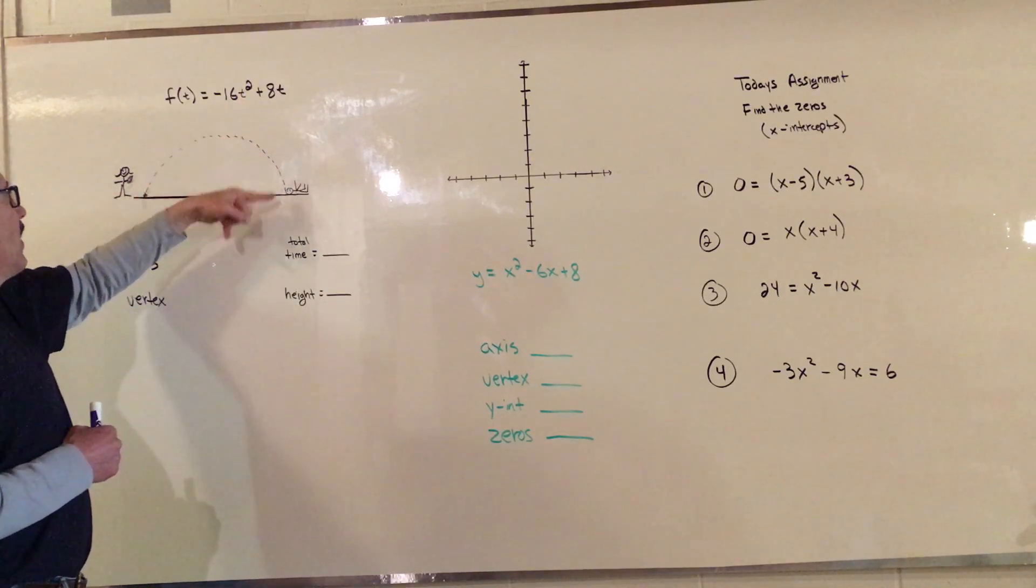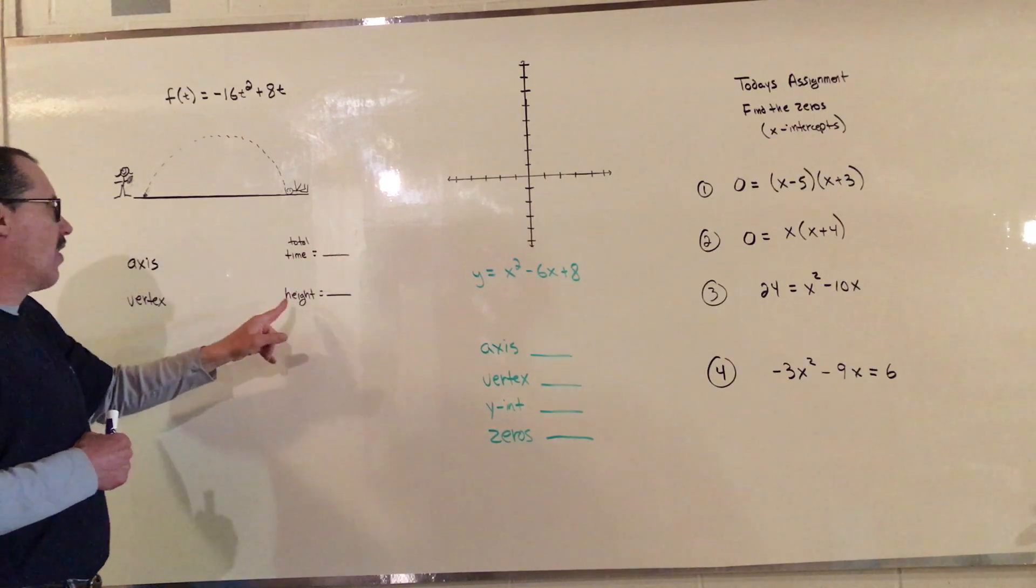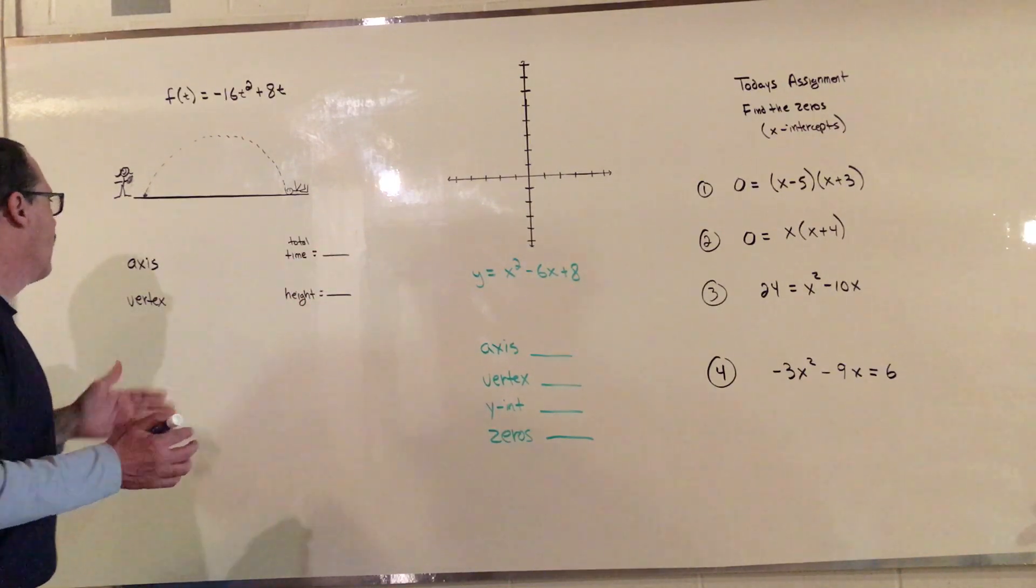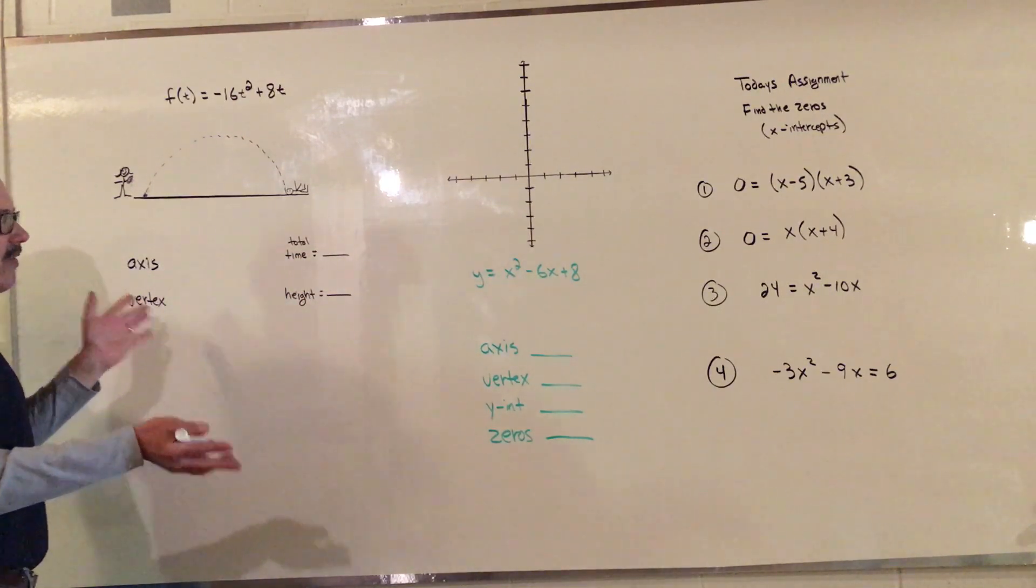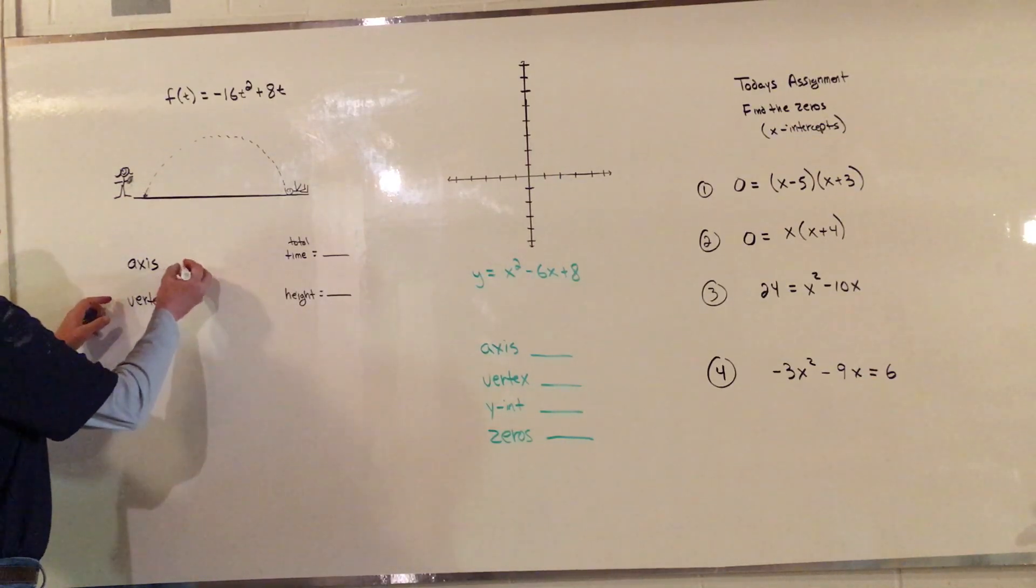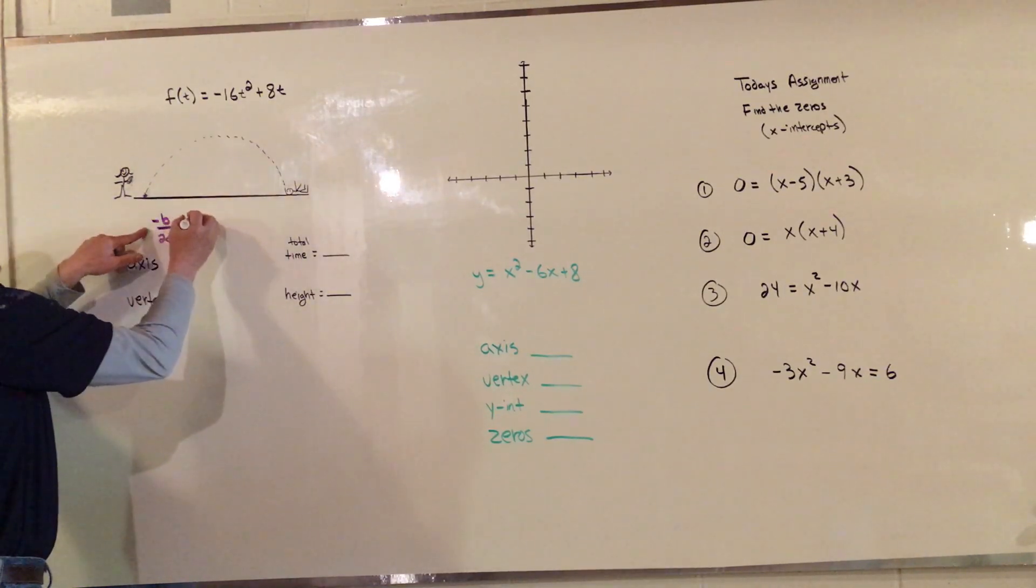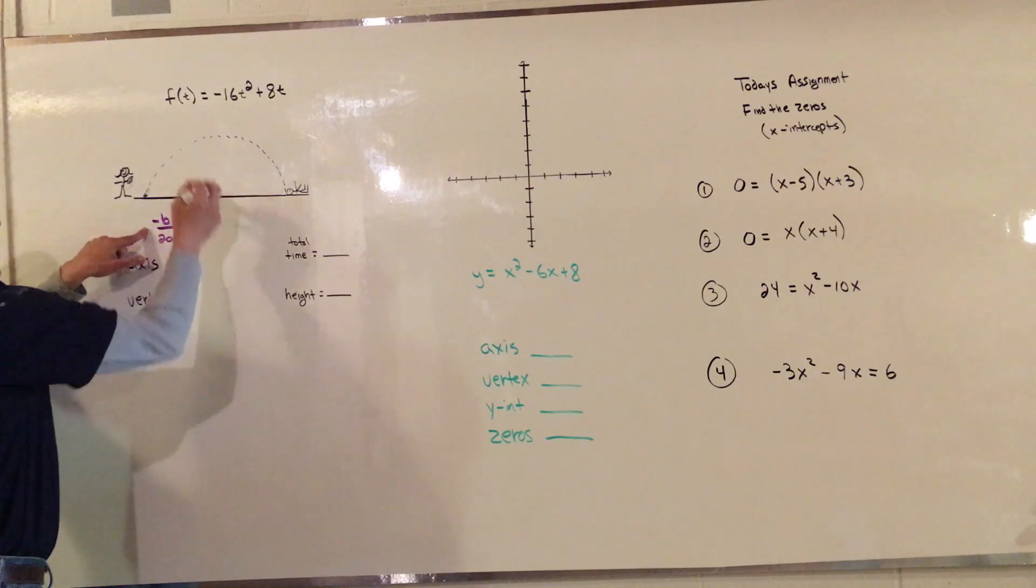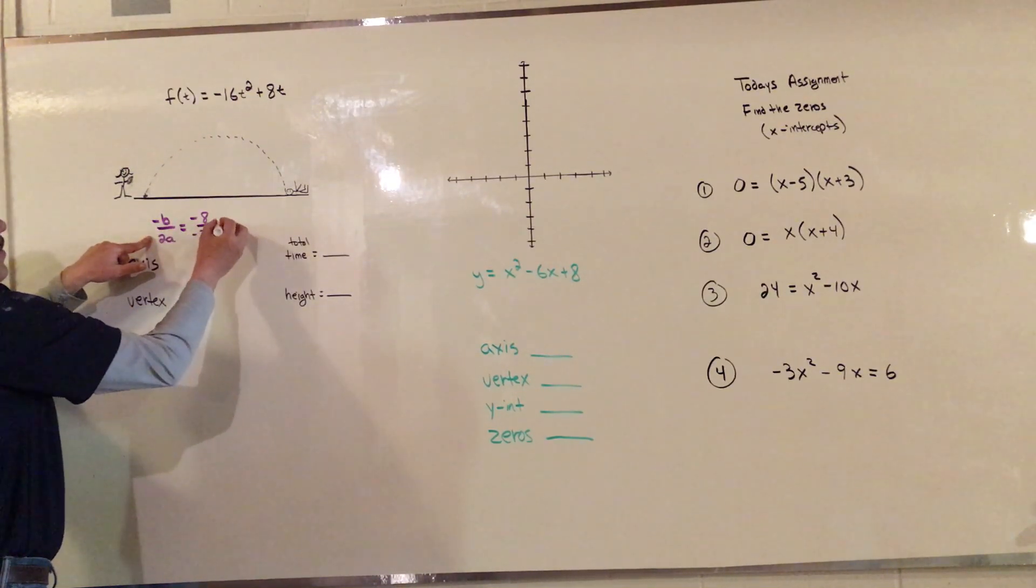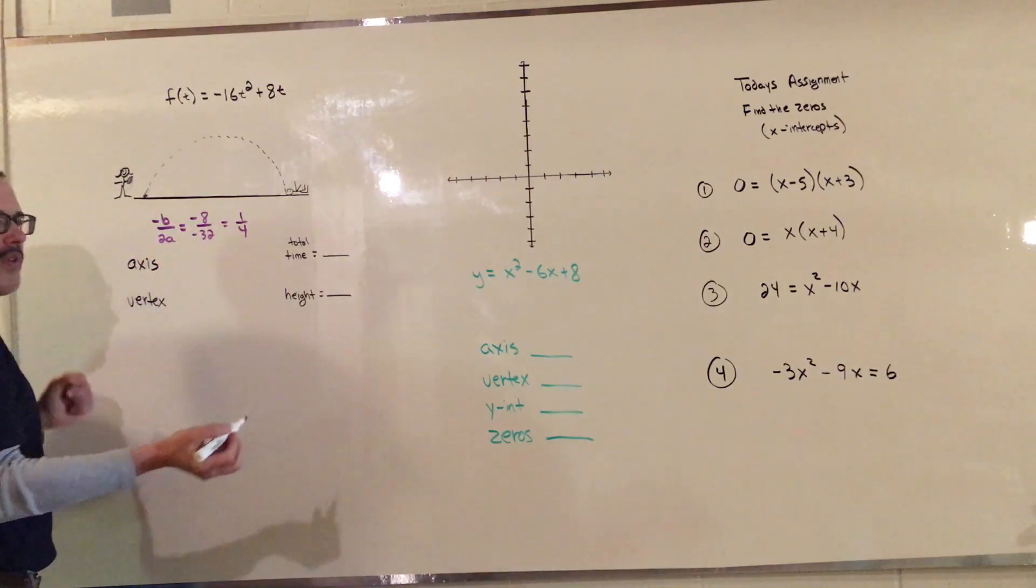This models what he did as he flew through the air. We're going to find out how long he was in the air and his total height. To do that, you just find the axis which is negative b over 2a. So the negative of 8 is negative 8, and 2 times negative 16 is negative 32. If you reduce that you get 1/4.